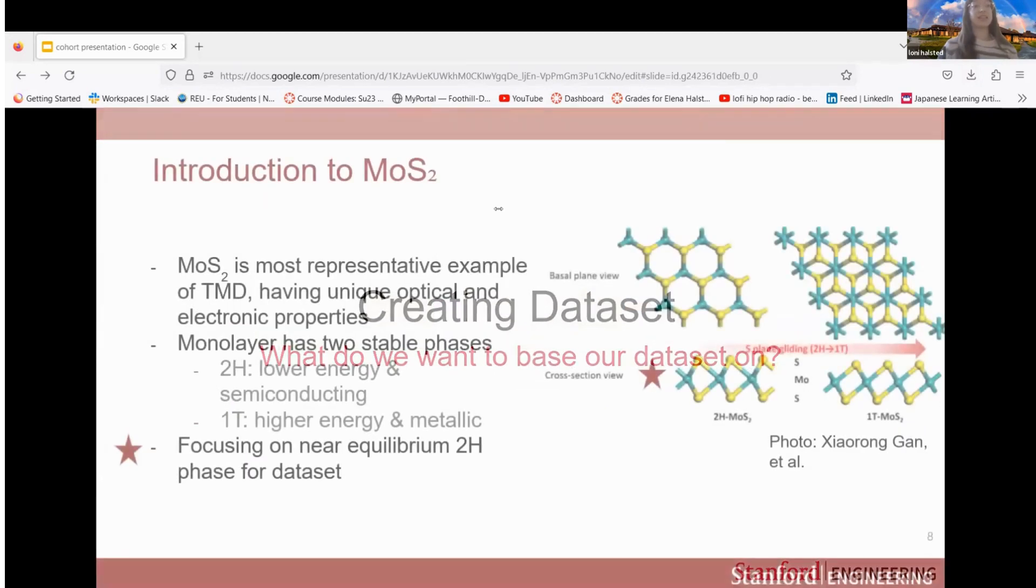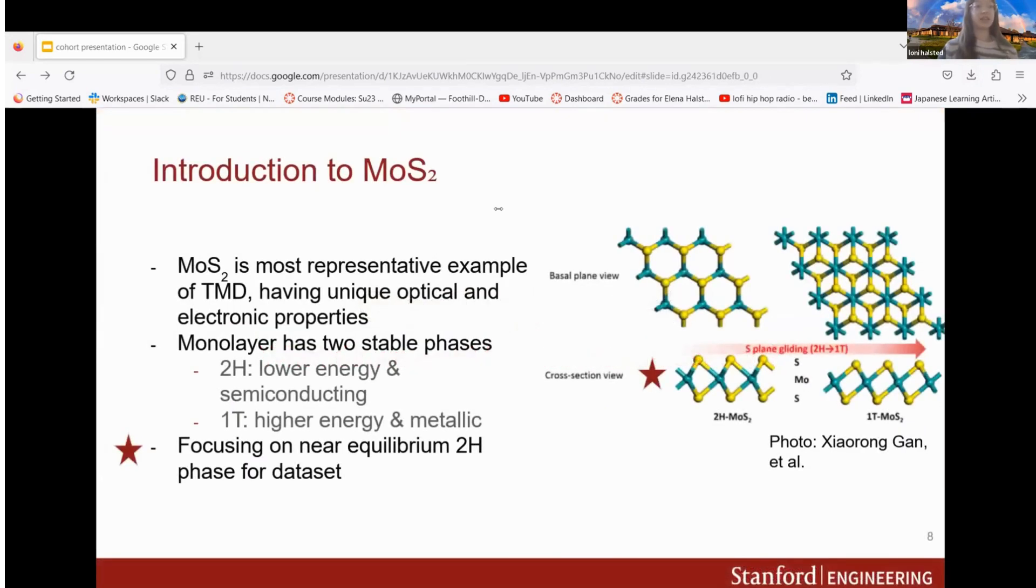In creating a dataset, here is a little introduction to MOS2. MOS2 has two stable phases, a 2H phase and a 1T phase. For our dataset we are focusing on the near equilibrium 2H phase shown by the red star. We didn't want to blow up the model, we just wanted to capture the type of shifts that would happen when we stack layers on top of each other.